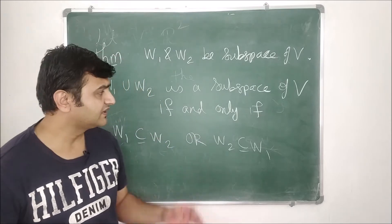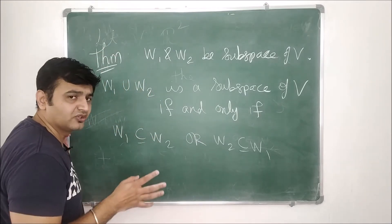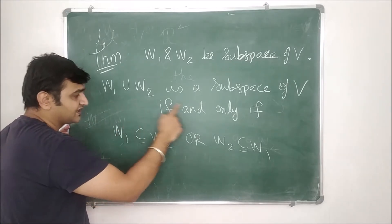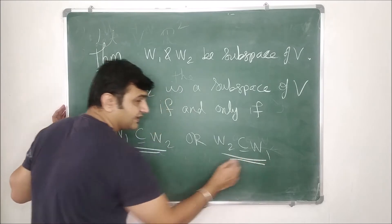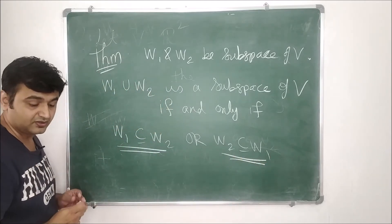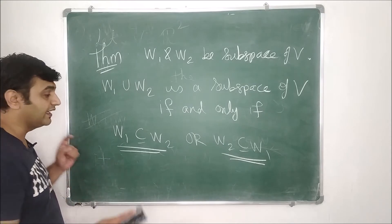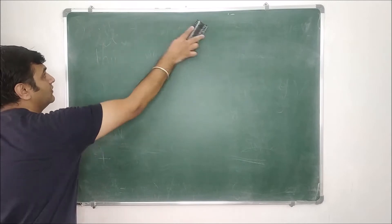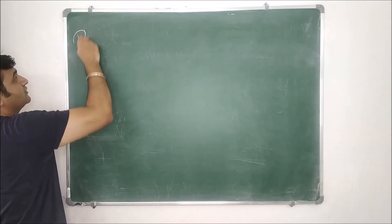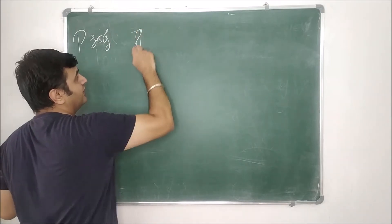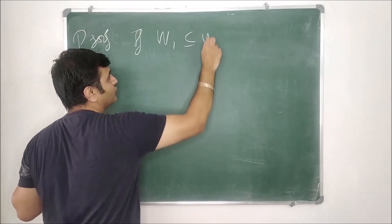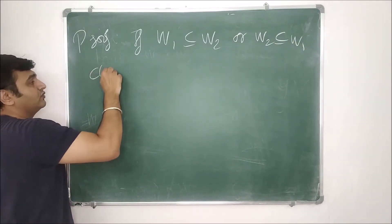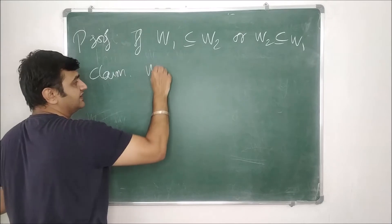Since the union of subspaces is not always a subspace, the question is: when is it a subspace? The answer is it is a subspace if and only if one of the sets is contained in the other. If this condition is satisfied, then only we say that the union of subspaces is a subspace. Let's go for the proof.